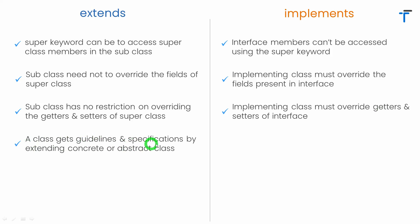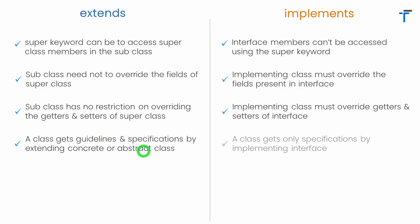A class gets guideline and specification by extending a concrete class or an abstract class. When a class extends a concrete class, it gets guidelines in the form of complete method definitions. When extending an abstract class, the abstract methods provide specification and the concrete methods provide guidelines to the subclass. When we use implements to inherit an interface, a class gets only specification — there is no chance of getting guidelines. The class will only get the abstract method declaration from the interface.